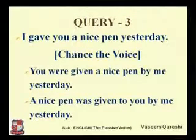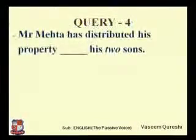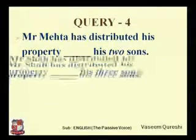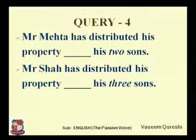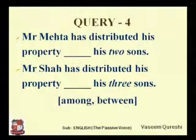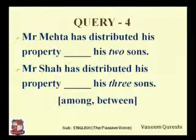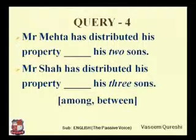Query number four: 'Mr. Mehta has distributed his property blank his two sons' and 'Mr. Shah has distributed his property blank his three sons.' The options are 'among' and 'between'. When we are talking about two persons, things, or objects, we use 'between' — for example, 'My house is between a temple and a mosque.' But if we talk about more than two, we use 'among'. So, Mr. Shah has distributed his property among his three sons.